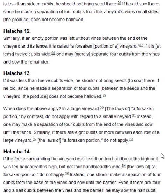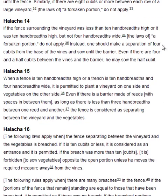Halakha 14. If the fence surrounding the vineyard was less than ten handbreadths high, or it was ten handbreadths high but not four handbreadths wide, the laws of a forsaken portion do not apply. Instead, one should make a separation of four cubits from the base of the vines and sow until the barrier. Even if there are four and a half cubits between the vines and the barrier, you may sow the half cubit.